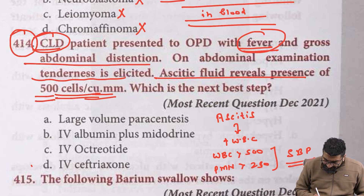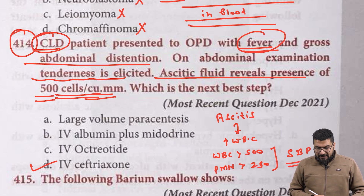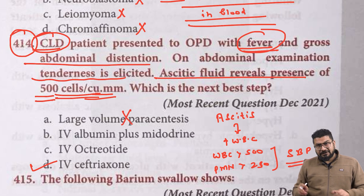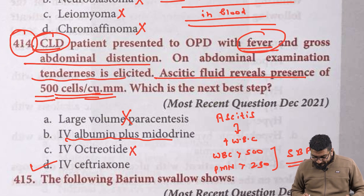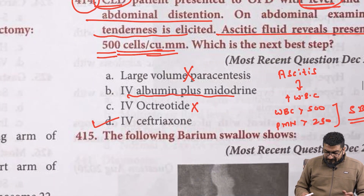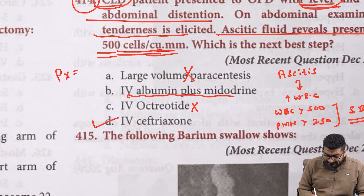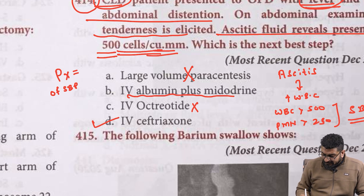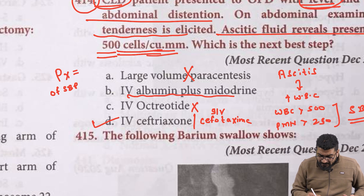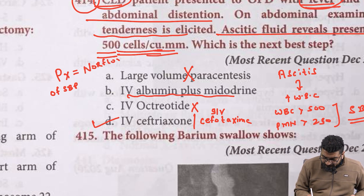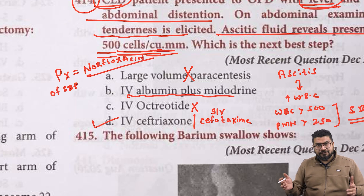To manage SBP, the antibiotic of choice is IV cefotaxone. Large volume paracentesis (ascitic tap) should not be done because the fluid is infected. IV albumin plus midodrine can be used in hypoalbuminemia; octreotide is used in varices and hepatorenal syndrome. For prophylaxis of SBP, the drug used is norfloxacin. These are important future exam questions.